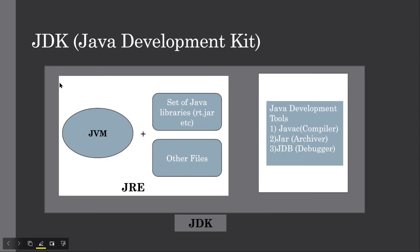Now let's see the Java Development Kit as a whole. JDK consists of JRE, and JRE consists of JVM, the set of libraries including rt.jar which contains the classes of core Java API, and other files. Besides that, JDK consists of Java development tools like the compiler, the debugger, the interpreter, and different tools.